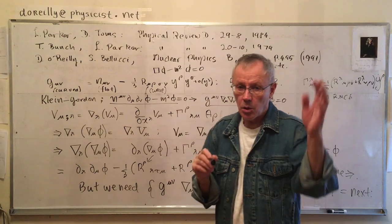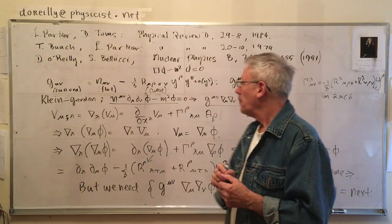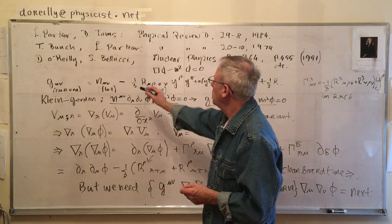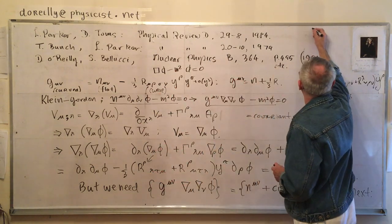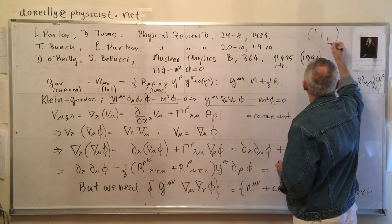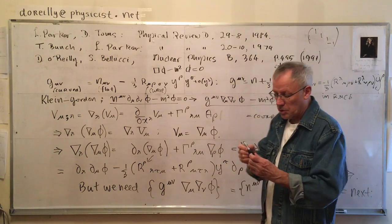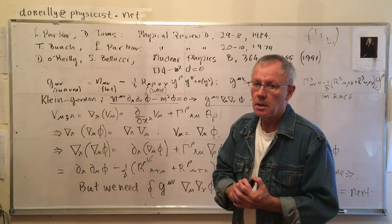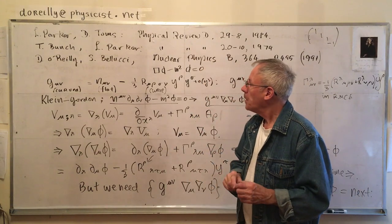Y is our normal coordinate constructed at a point, and locally this part is flat. Eta mu nu would be the flat metric. Now, most of these people use c equals 1. I'll talk about that later. I have units coming up. That's coming up.